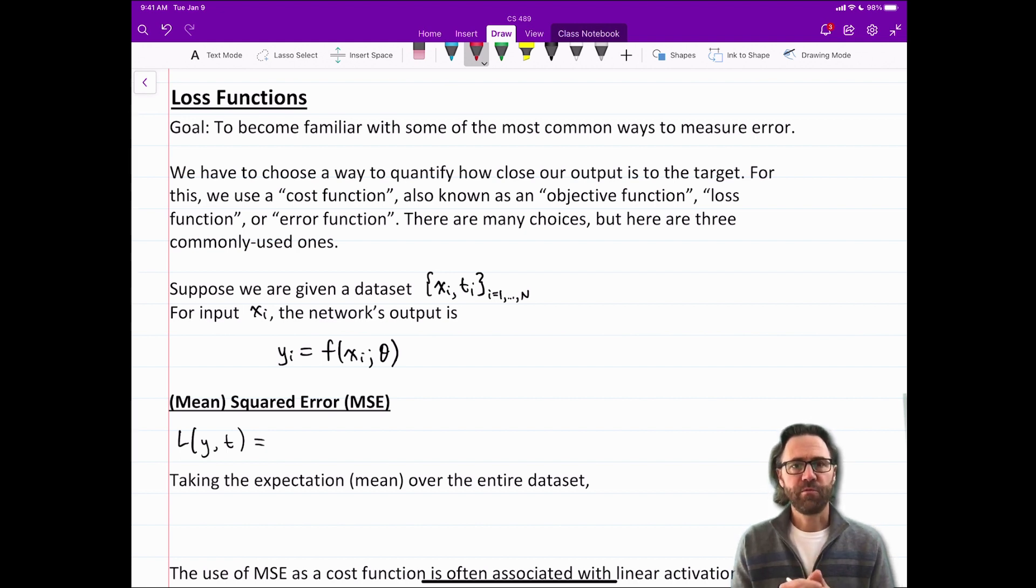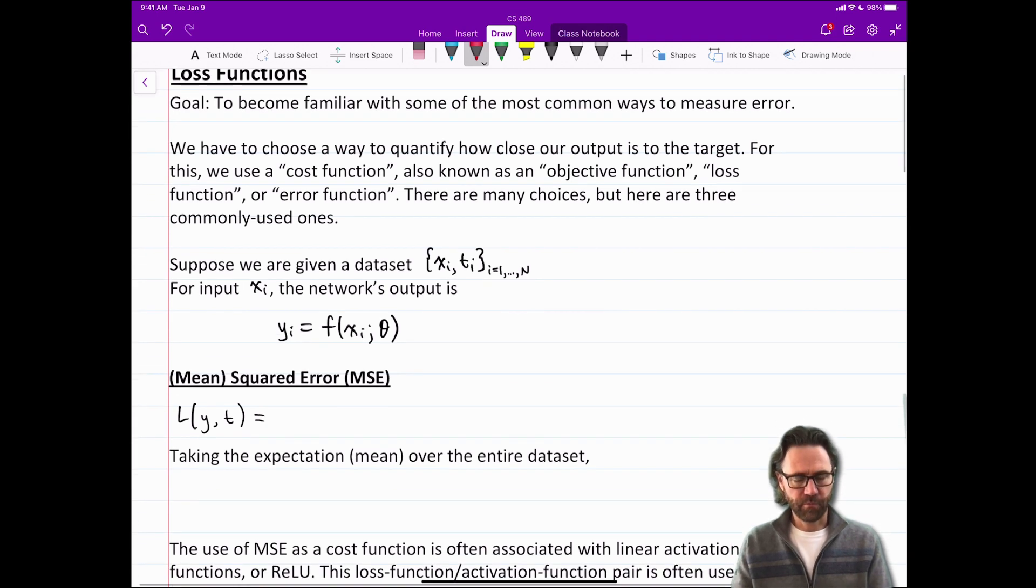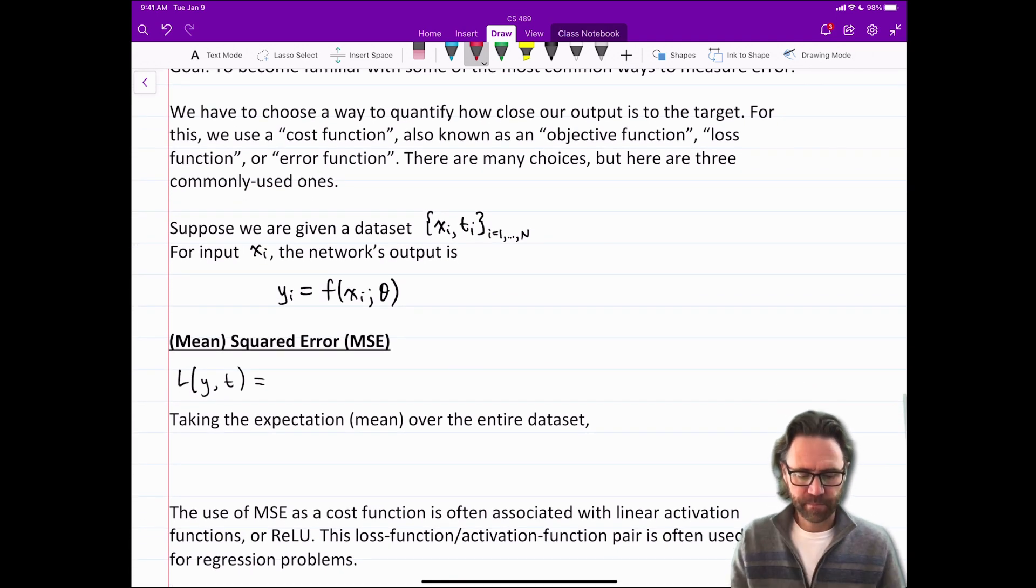For context let's start with a data set with pairs of inputs and output targets XI, TI where I goes from 1 to N. So for the input XI the network's output is YI and we can represent the operation of the network using this function notation F of XI given the sets of weights and biases the parameters of the network in theta.